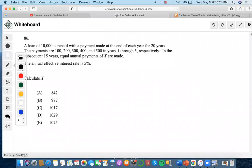Okay, so for this problem, it says a loan of $10,000 is repaid with payments made at the end of 20 years. Payments are these amounts, 1 to 5, and in the subsequent 15 years, equal payments of X are made. Calculate X.